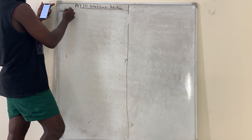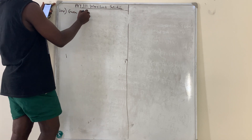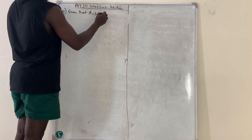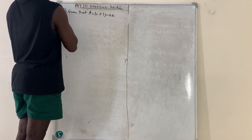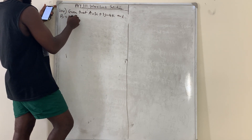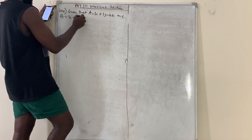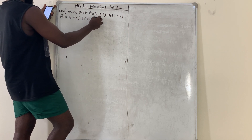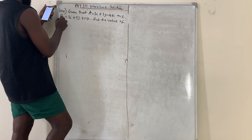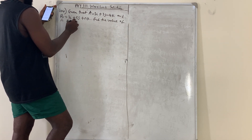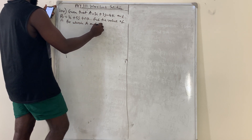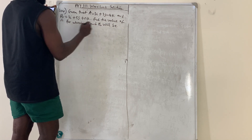Question number 104: Given that A = 3i + 3j − 4k and B = 3i + 5j + nk, find the value of n for which A and B will be parallel.